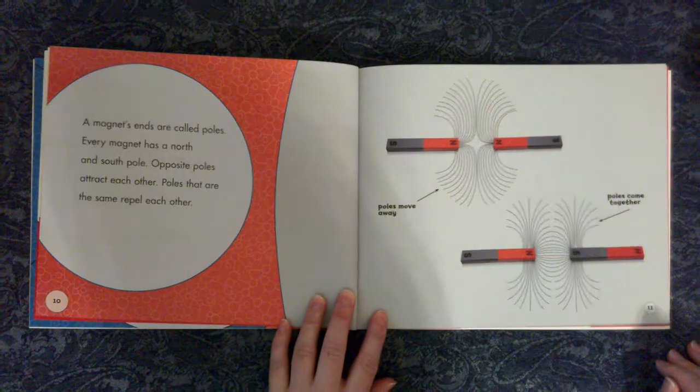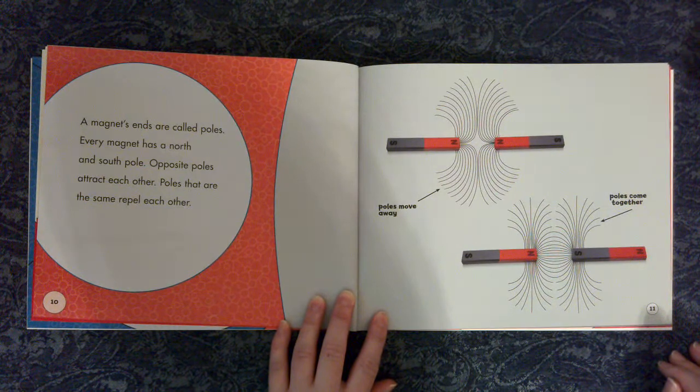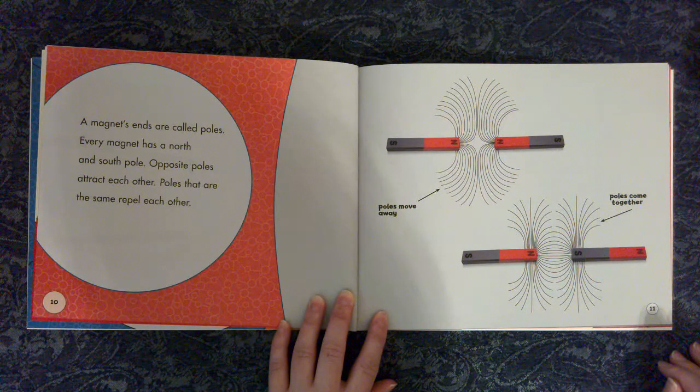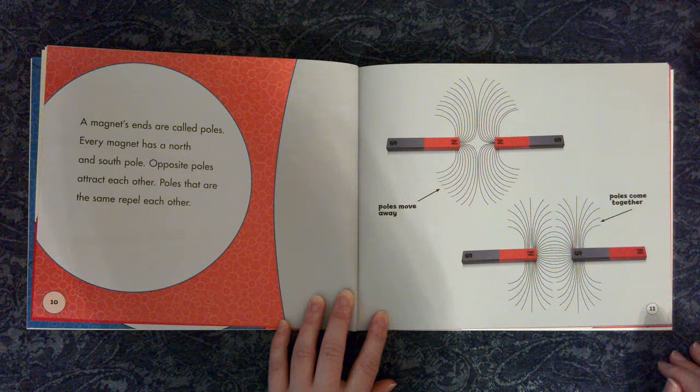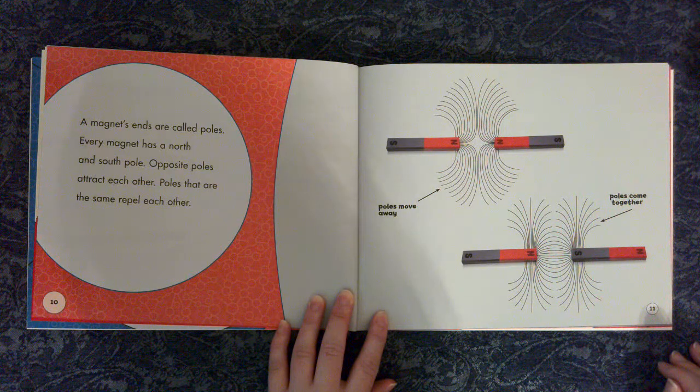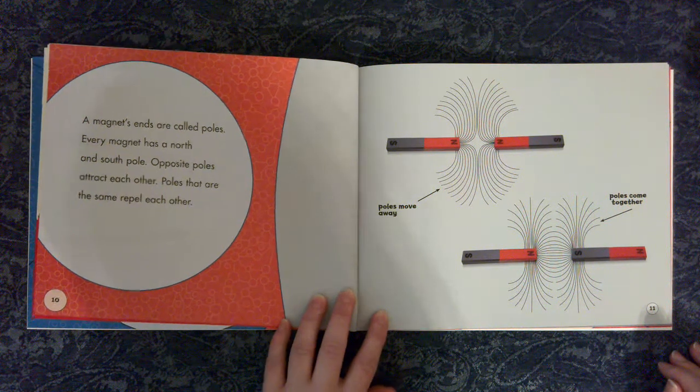A magnet's ends are called poles. Every magnet has a north and south pole. Opposite poles attract each other. Poles that are the same repel each other. Poles move away. Poles come together.